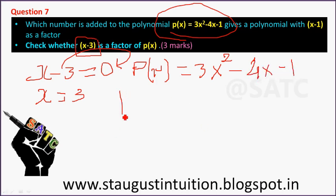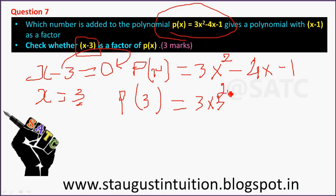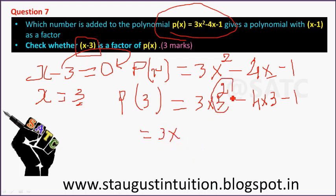Set x minus 3 equal to 0, so x equals 3. Then p(3) equals 3 into 3 squared minus 4 into 3 minus 1. That is 3 times 9 minus 12 minus 1.